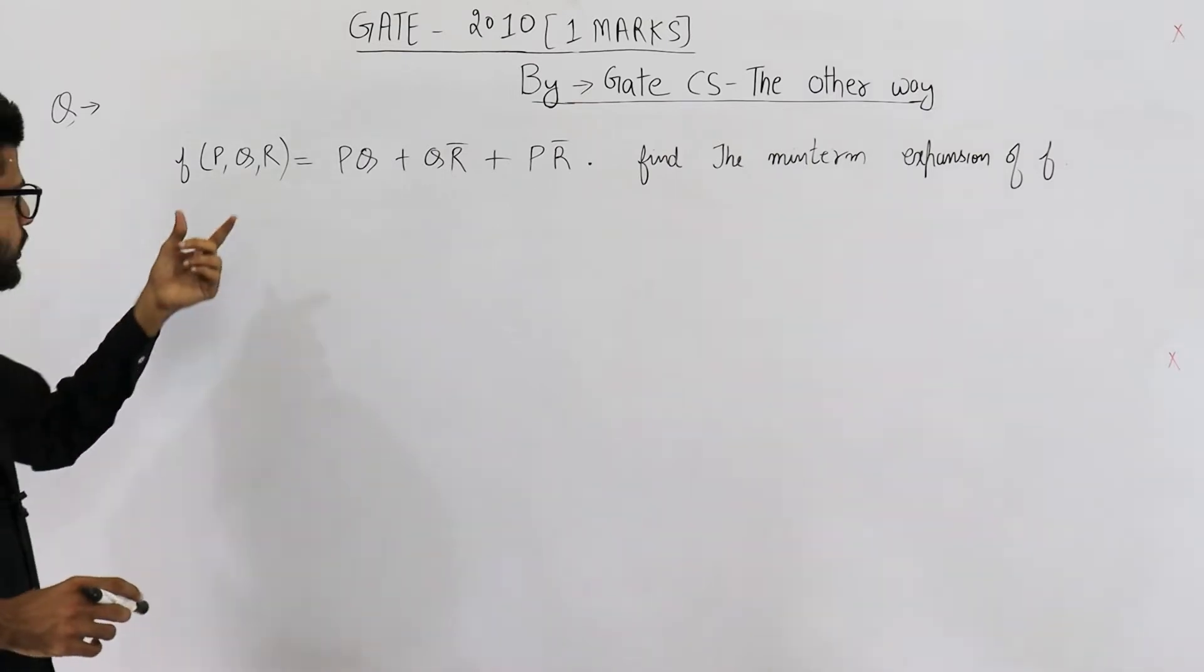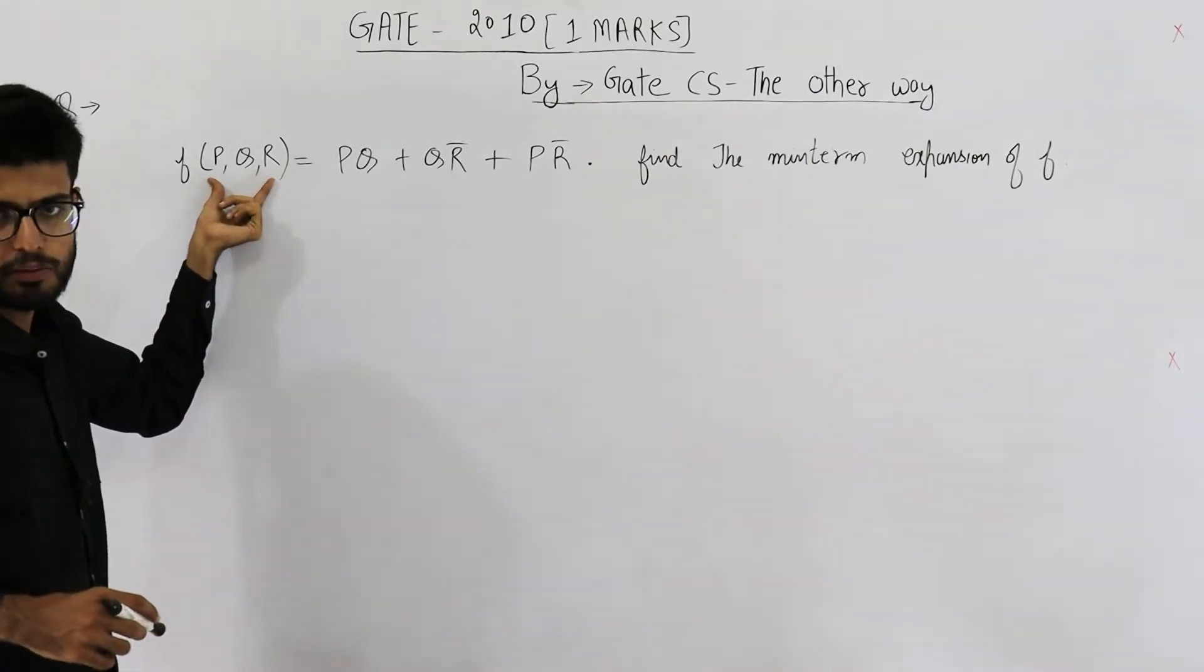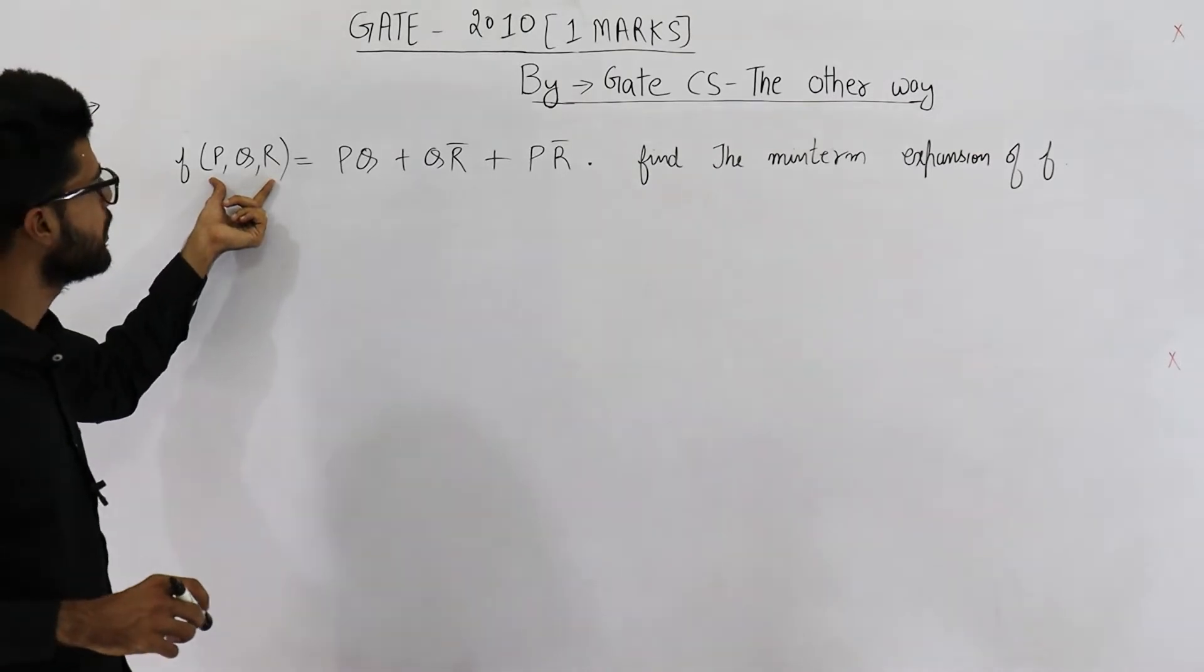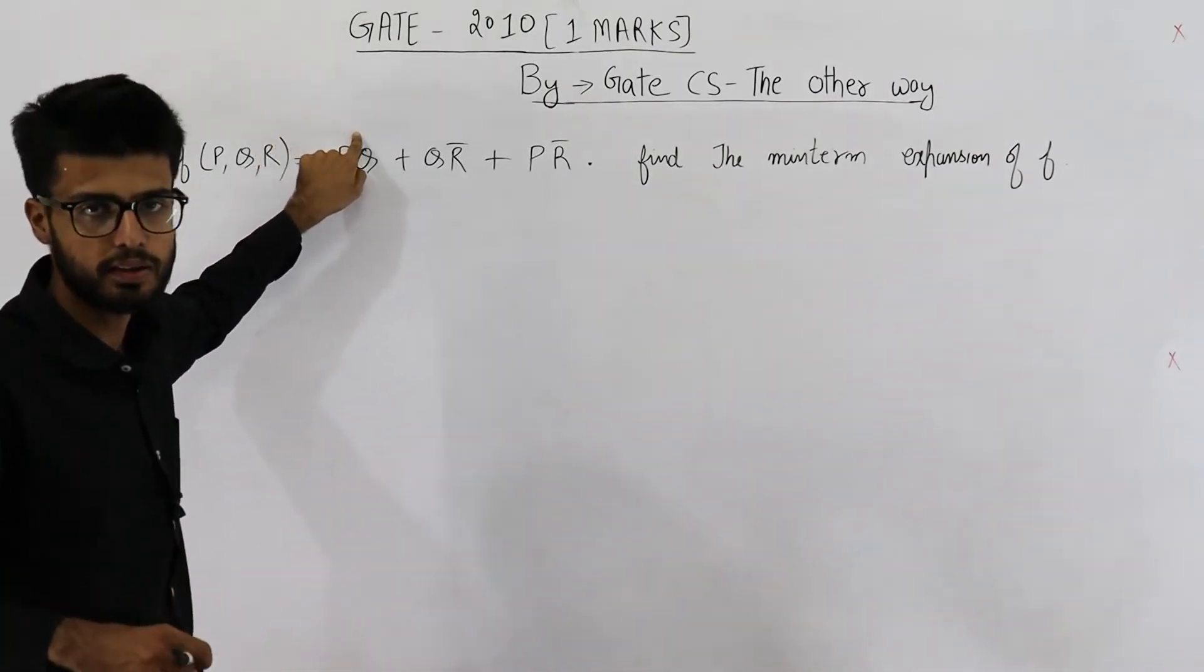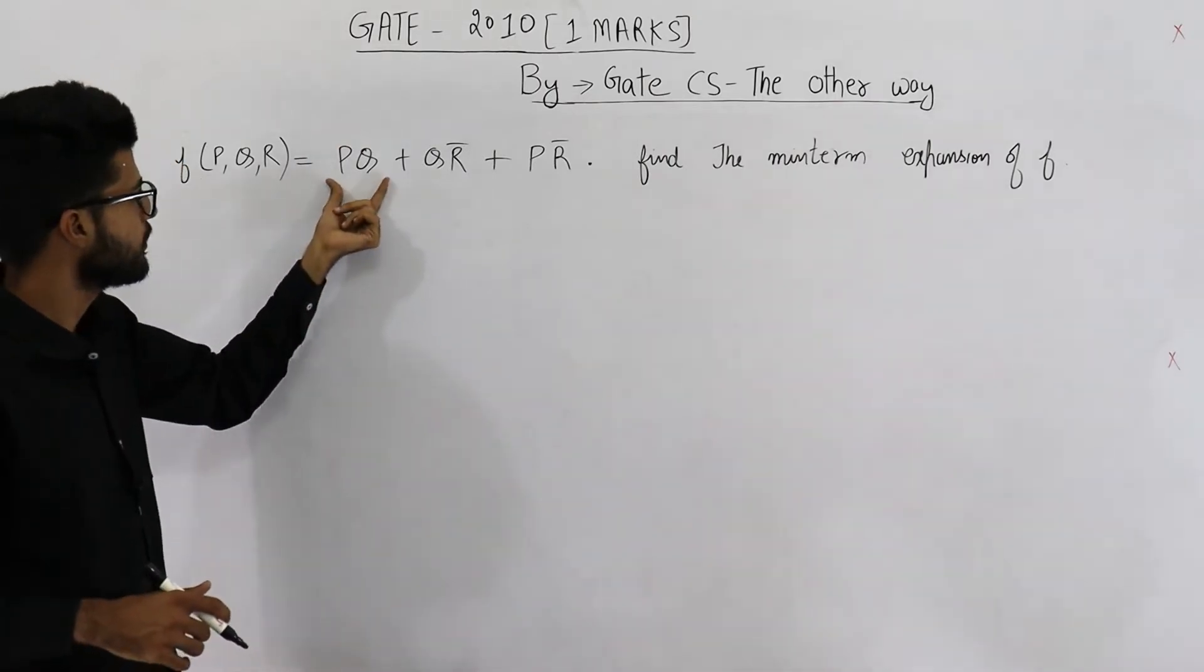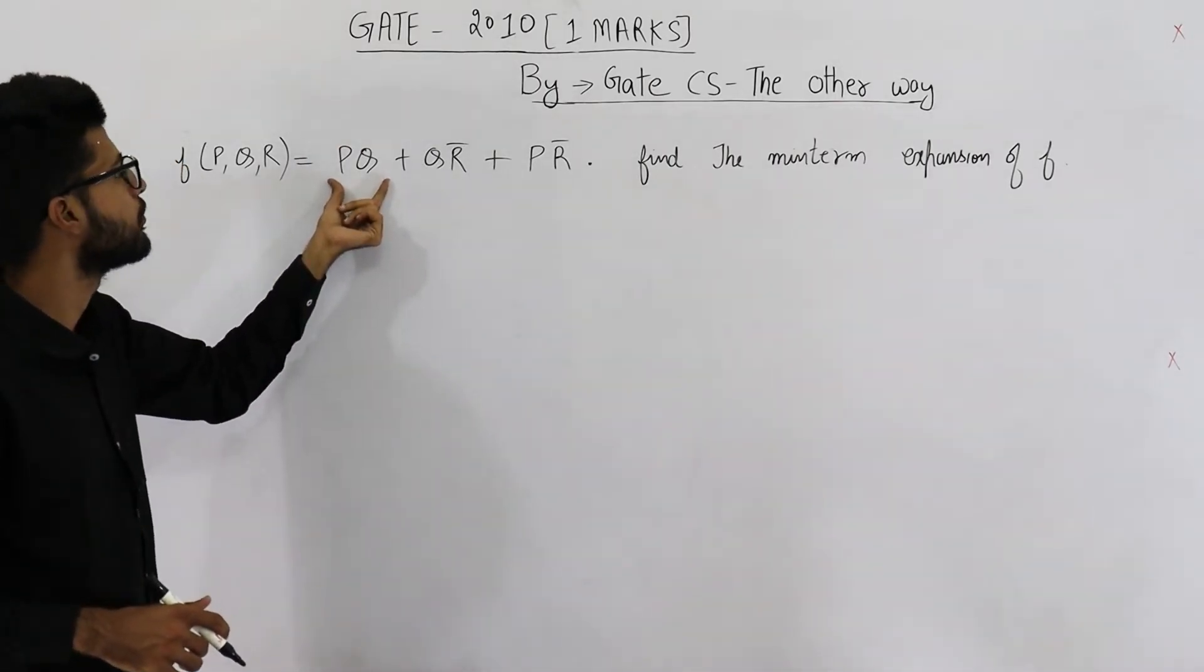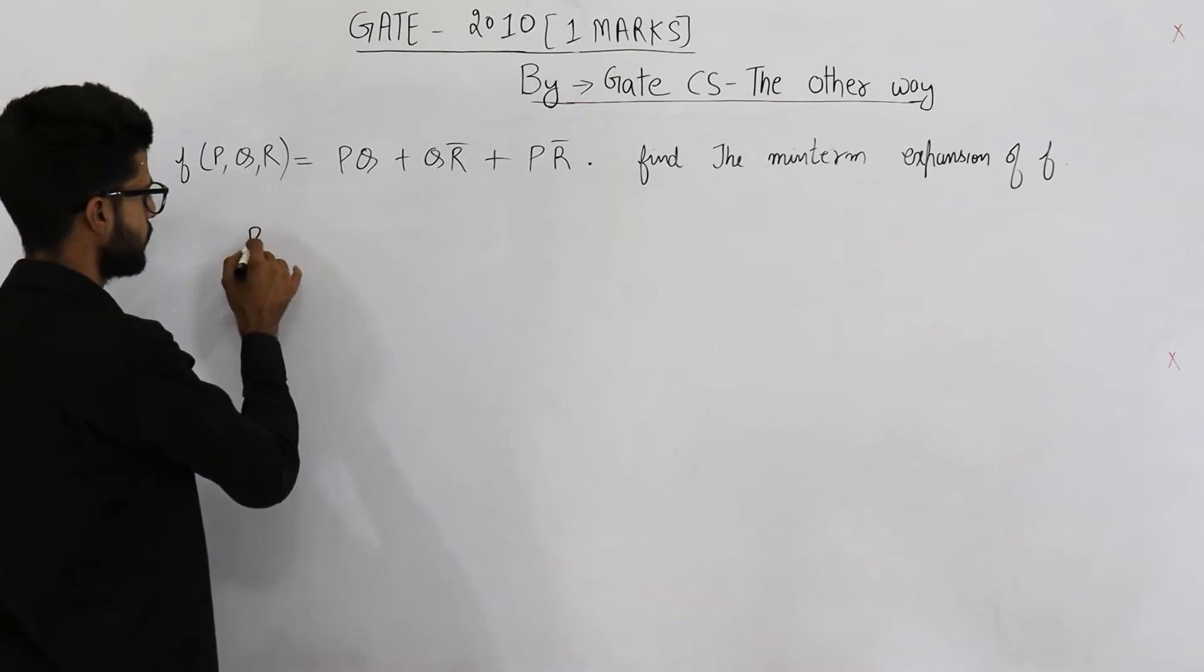So you know this function is a function of three variables and to find out the minterm expansion each and every term must contain all the three variables. Now this term does not contain the variable r. Let's try to include r in this term.